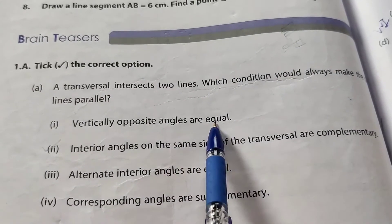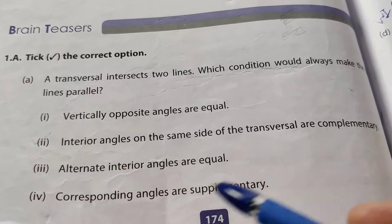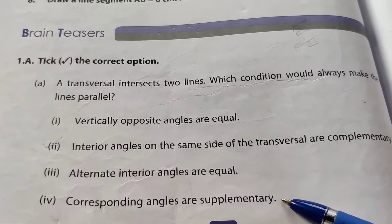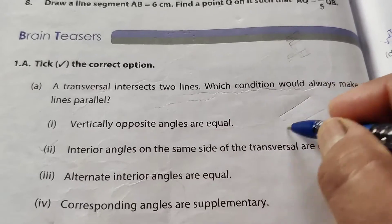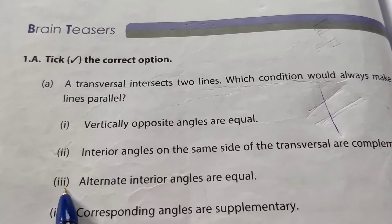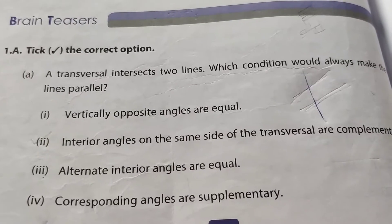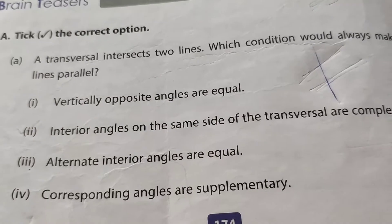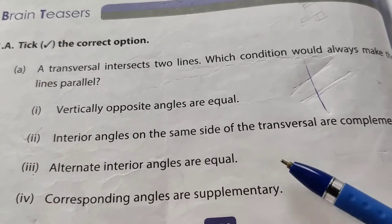Options: (A) vertically opposite angles are equal, (B) interior angles on the same side of the transversal are complementary, (C) alternate interior angles are equal, (D) corresponding angles are supplementary. When two lines are cut by a transversal, the co-interior angles are supplementary — not complementary. Therefore, the third option — alternate interior angles are equal — is the correct answer.